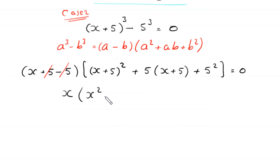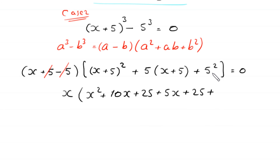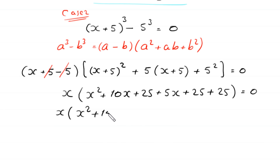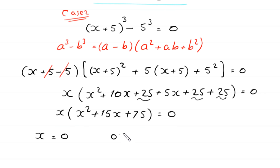Expanding: x squared plus 10x plus 25, plus 5x plus 25, plus 25 gives x squared plus 15x plus 75. So the equation becomes x times (x squared plus 15x plus 75) equals 0. From here, either x equals 0, which is the fourth solution, or x squared plus 15x plus 75 equals 0.